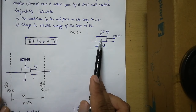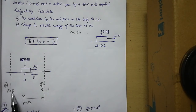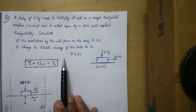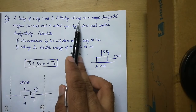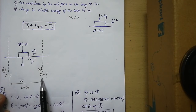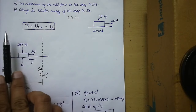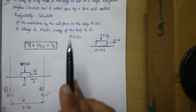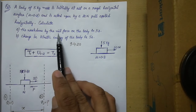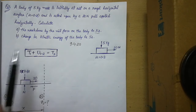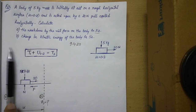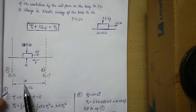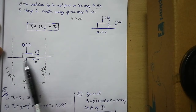Let us also represent the stages. This is the initial stage, stage 1, and this is the final stage, stage 2. At stage 1, v₁ equals 0 because the problem states the body is initially at rest. At stage 2, the final velocity is v₂, which we don't know. The distance between stage 1 and stage 2 is not given, so it is represented as x. However, the time taken from stage 1 to stage 2 is given as 5 seconds, so time is known but distance is not.